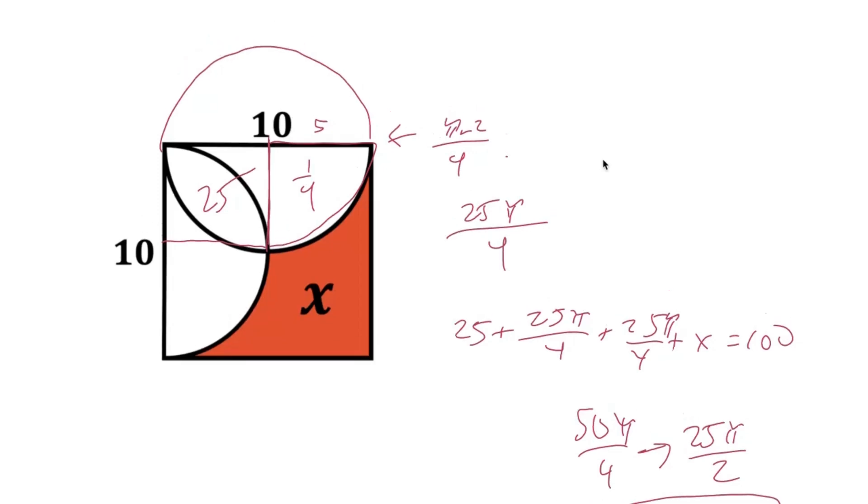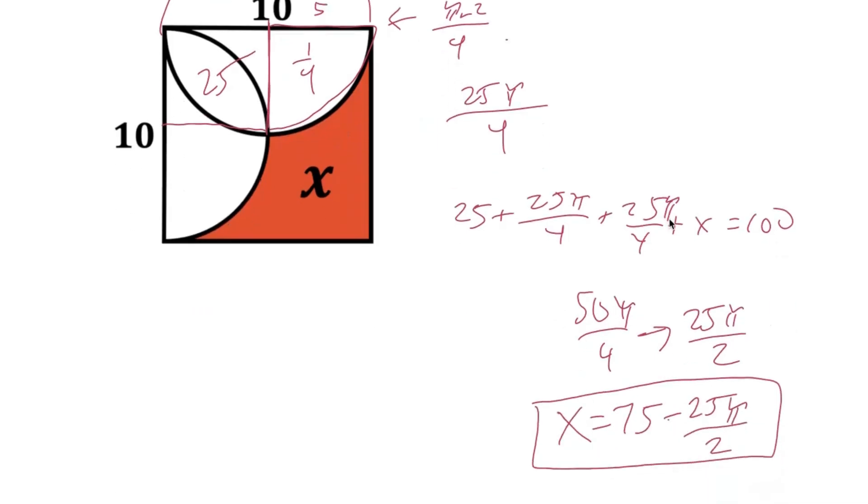Now we have all the components that we need to solve for x, because we know the square, we know the areas of the two quarter circles, and now we just add everything together plus x equals 100. 100 coming from the 10 times 10 as the total area of the entire square. Just rearrange a couple variables and solve for x, and we get x equals 75 minus 25 pi over 2.